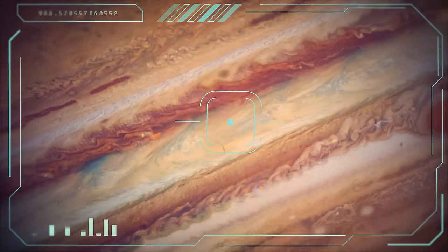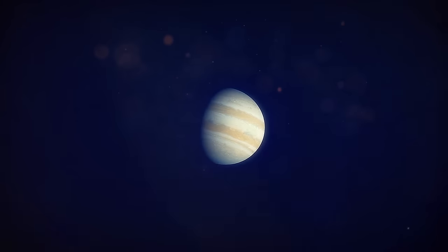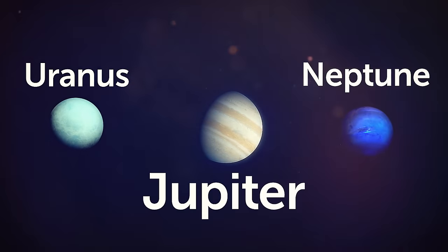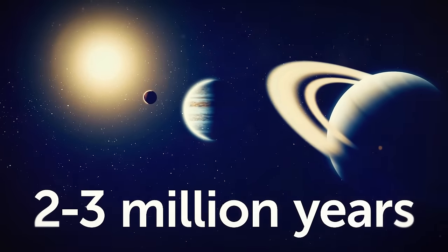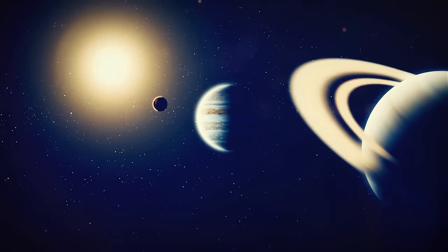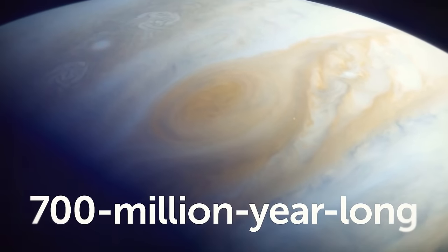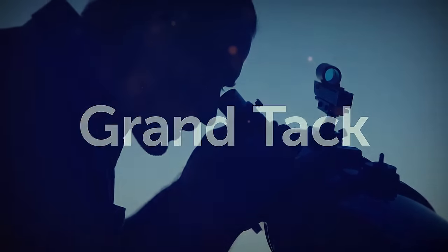During the time when it was forming, Jupiter was around four times as far from the sun as it is today, somewhere between Uranus and Neptune. About 2 to 3 million years after Jupiter first formed in the accretion disk of our sun, it started a 700-million-year-long phase astronomers call the Grand Tack.